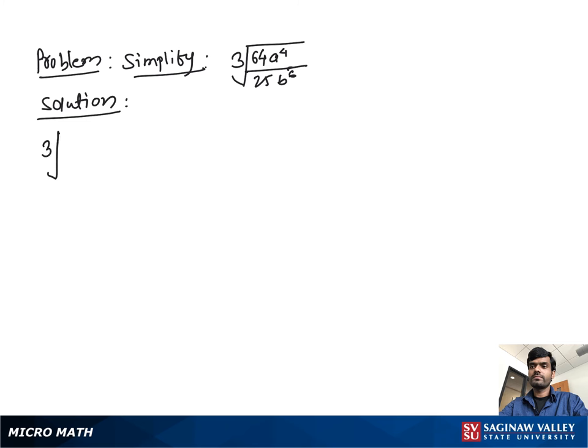Simplify cube root 64a⁴ divided by 25b⁶. Here we see a and b, two different variables. What we do is separate the cube root between numerator and denominator.